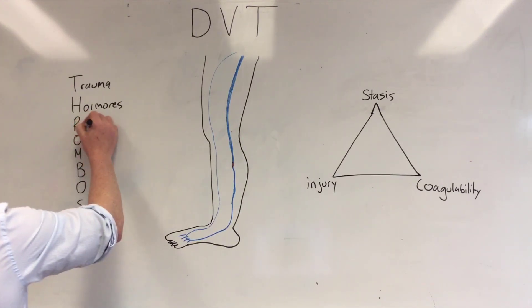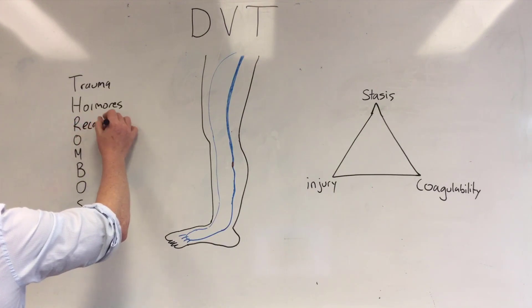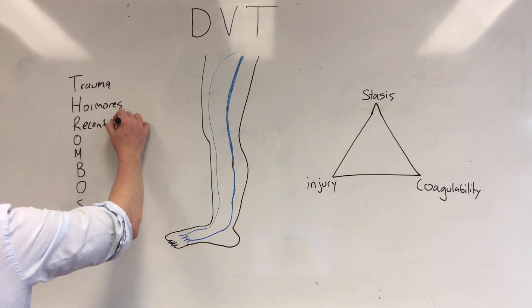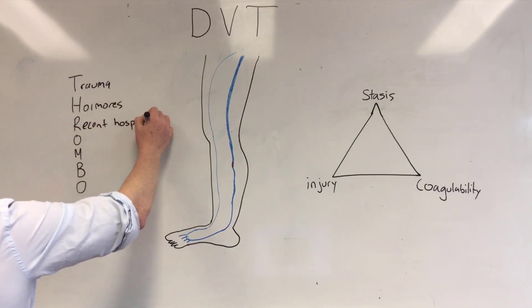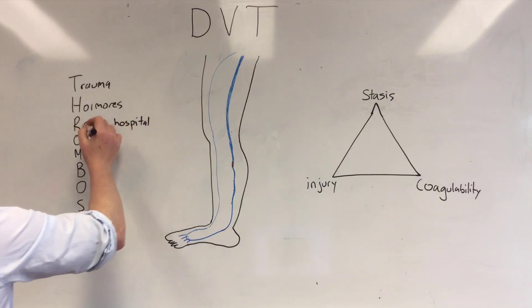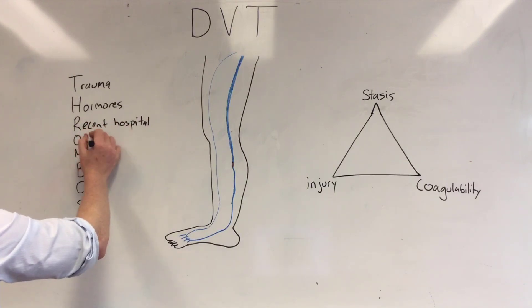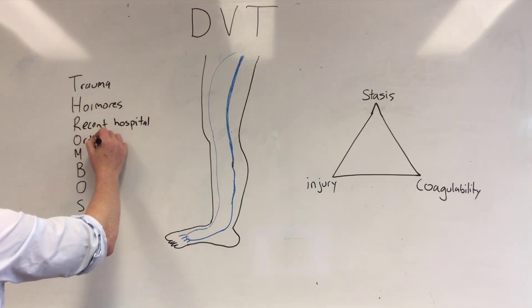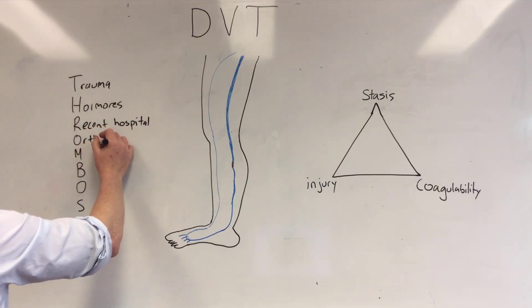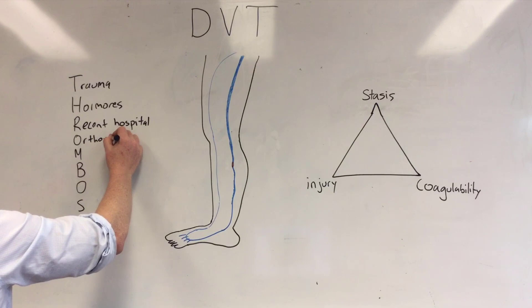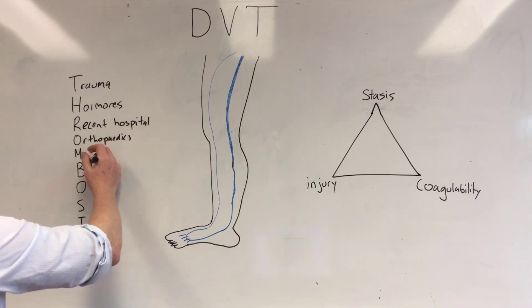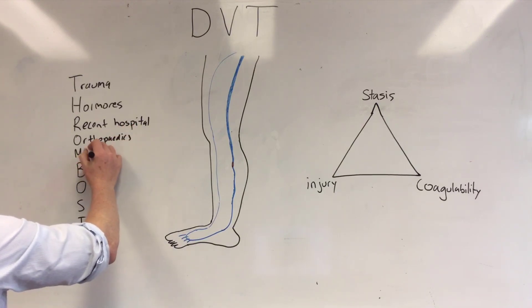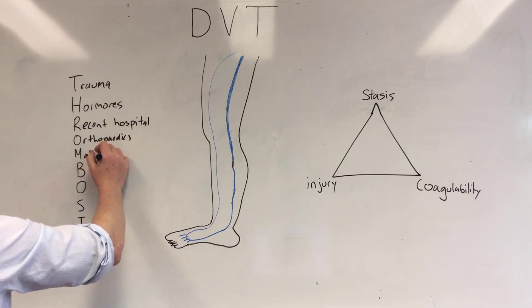R is for recent hospital visits. Also under R we have orthopedics — so anything to do with bones. M is for malignancies, so cancer.